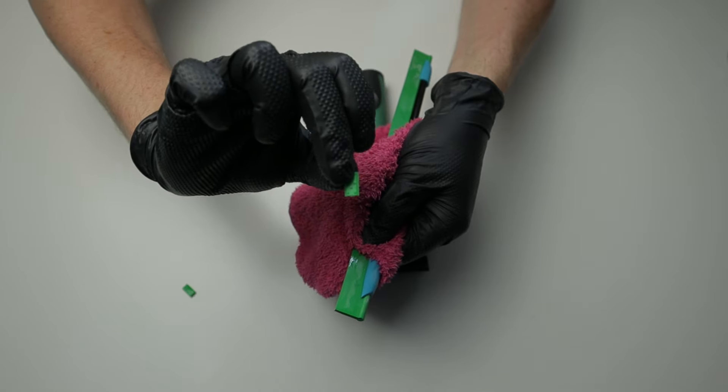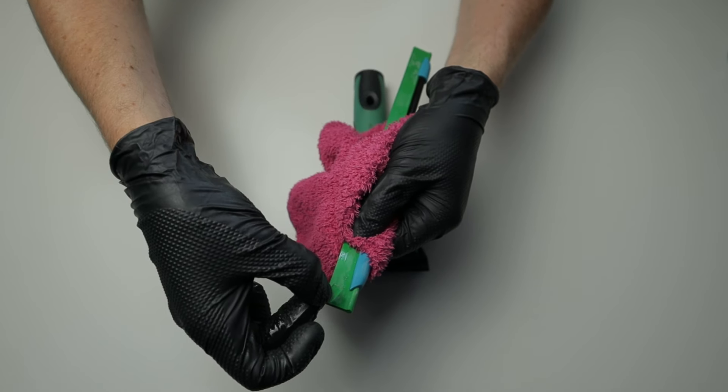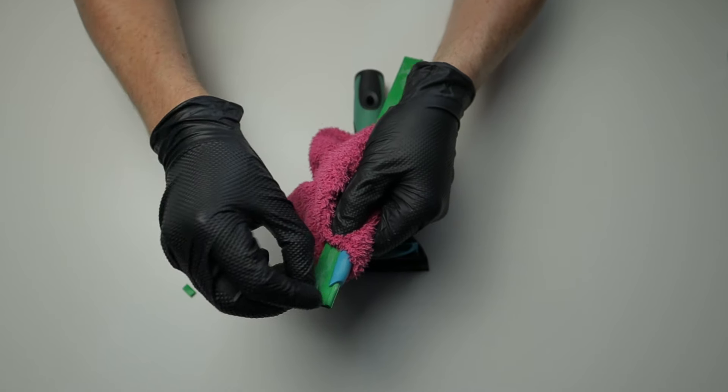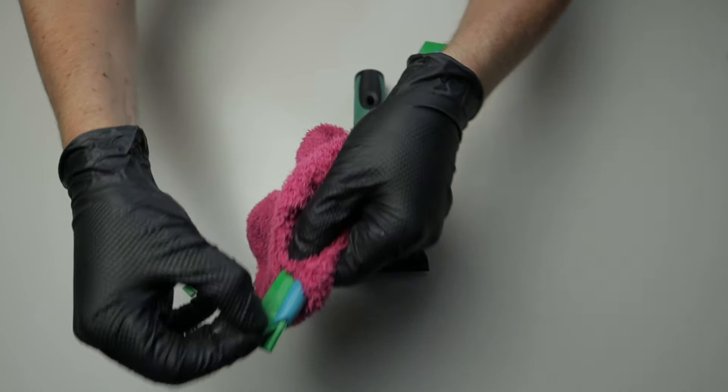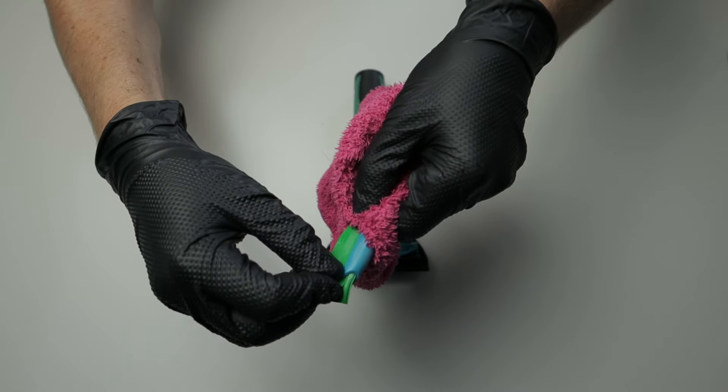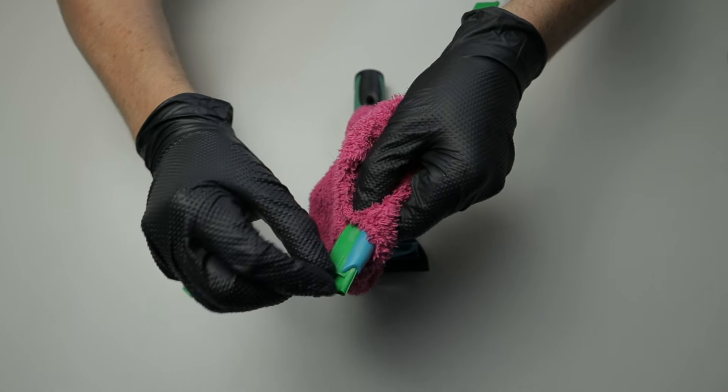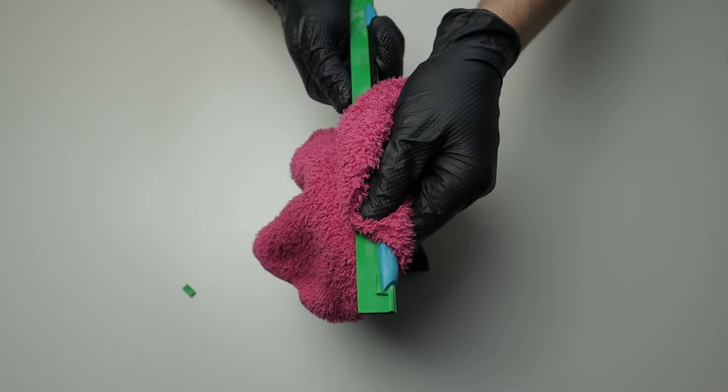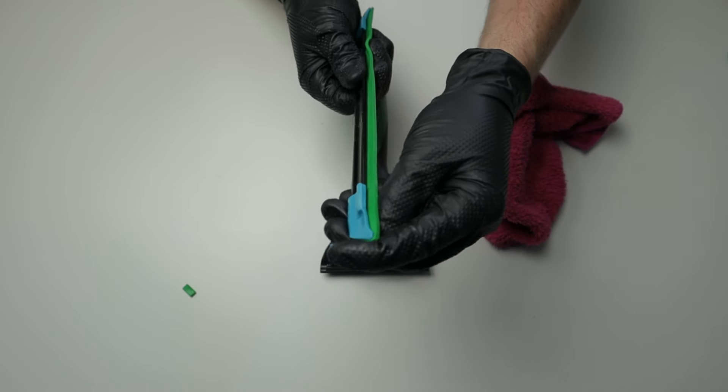The side with teeth go into the rubber. The smooth side faces you as the user. Taking our clip, push that inside of the channel, like so, and that will just help to really hold our squeegee rubber nice and tight.